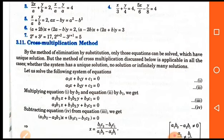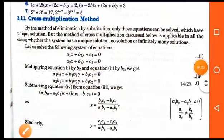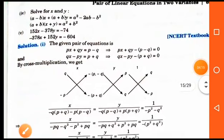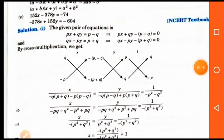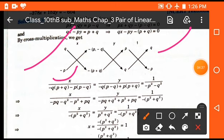To solve linear equations in two variables by the cross multiplication method, we arrange the equations in the standard form: a1x plus b1y plus c1 equals 0, and a2x plus b2y plus c2 equals 0. By applying the cross multiplication formula, we get x equal to b1c2 minus b2c1 upon a1b2 minus a2b1. The structure uses arrows crossing the coefficients, placing values in the numerator and denominator, with x, y, and 1 in the numerators.